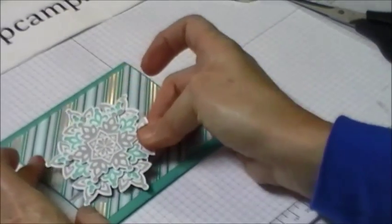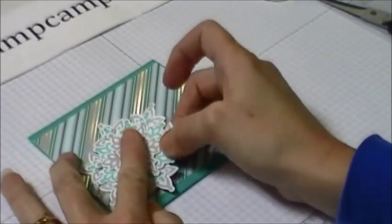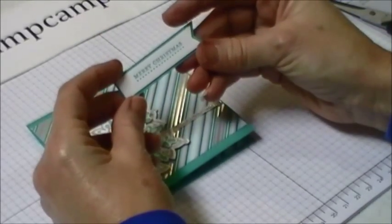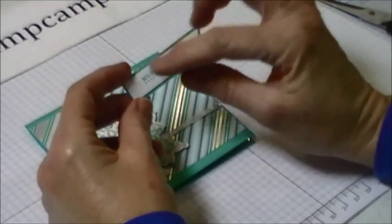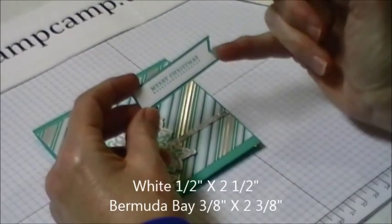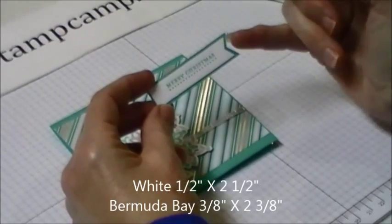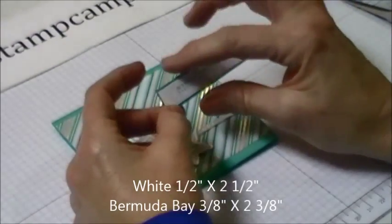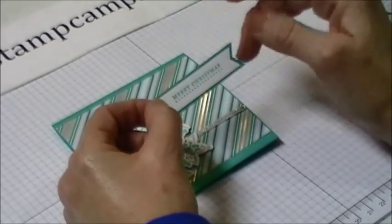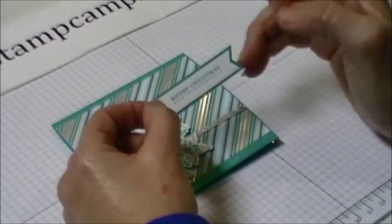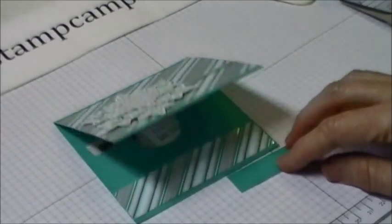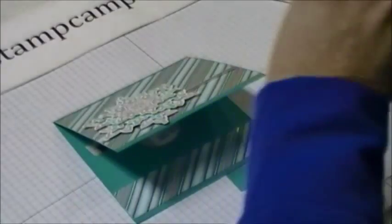I stamped Merry Christmas from the Teeny Tiny Wishes. The white is cut ½ inch by 2½ and then I took the hexagon punch and did a little flag here. The Bermuda Bay is cut ⅜ inch by 2⅜ inch and then just made the little flag. So I'm going to put a little bit of dimensional on one end down here and glue that on the top part.